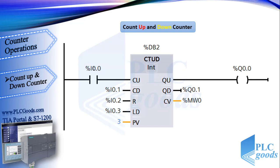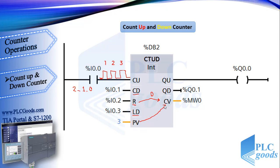Let's see how this simple ladder program works. For each pulse at the first input CU, the counter value increases — for example, from 0 to 3. At this moment, like a count up counter, because the current value equals the preset value, the first output QU will be on. After that, if we have three positive pulses at the second input CD, the current value decreases to 2, 1, and finally 0. The reset terminal can set CV to 0, and the load terminal copies the preset value to the current value. This counter has three outputs: the first output will be on if CV is equal to or greater than the preset value, otherwise it will be off.